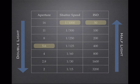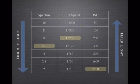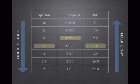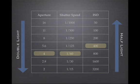Here are my settings: f5.6, 1/250 of a second, and ISO 3200. It was a very dark alley, so I cranked the ISO all the way to 3200. I realized that introduced noise, so I wanted to decrease the ISO down to 400 — cutting the light in half three times. Because I cut the light in half three times, I need to add three stops of light from either aperture or shutter speed. I dropped two stops on shutter speed to 1/60, and one stop on aperture from f5.6 to f4. That compensated for the three stops.